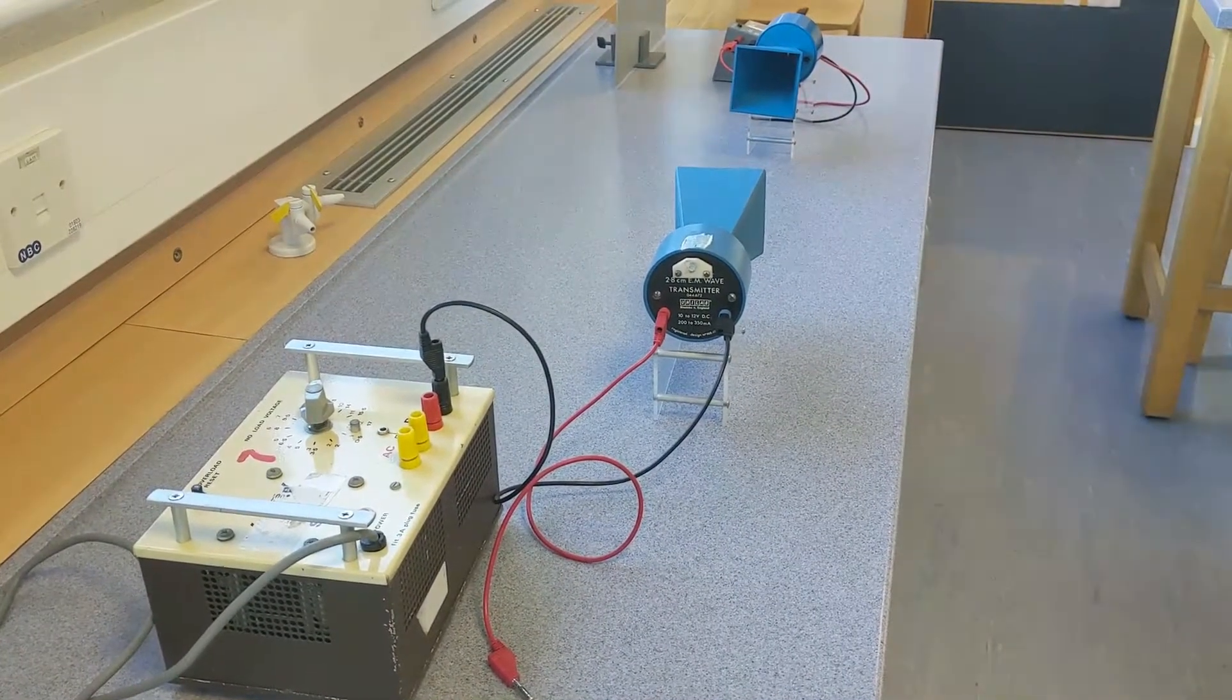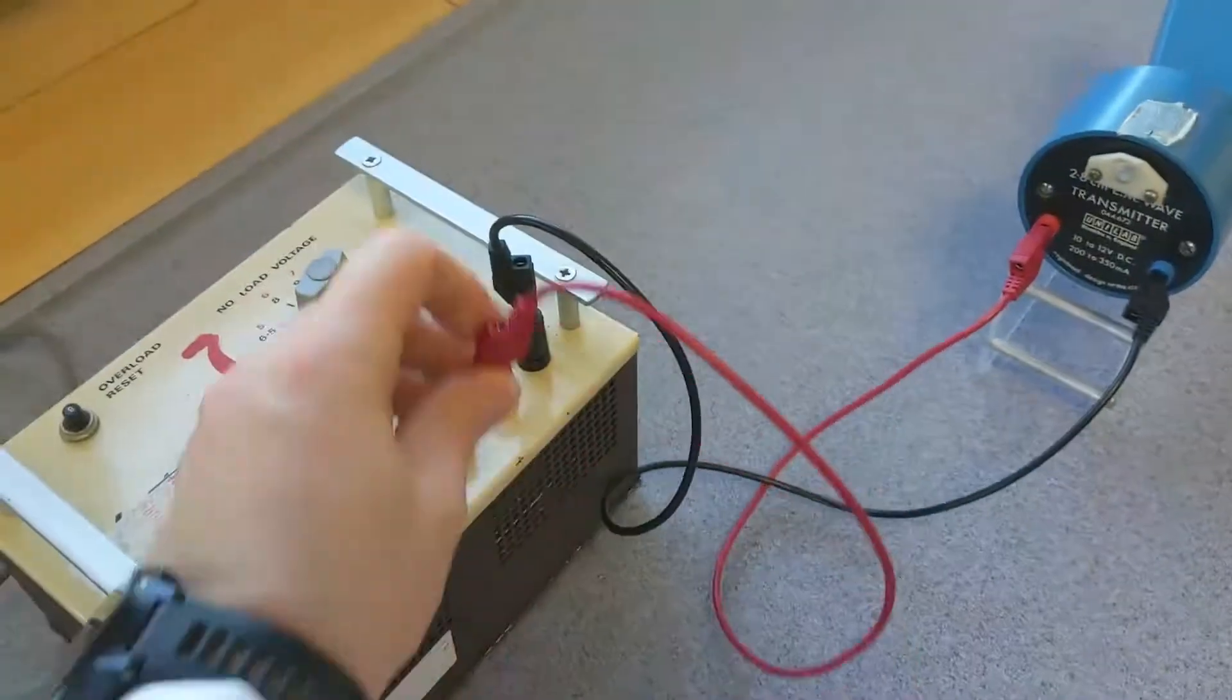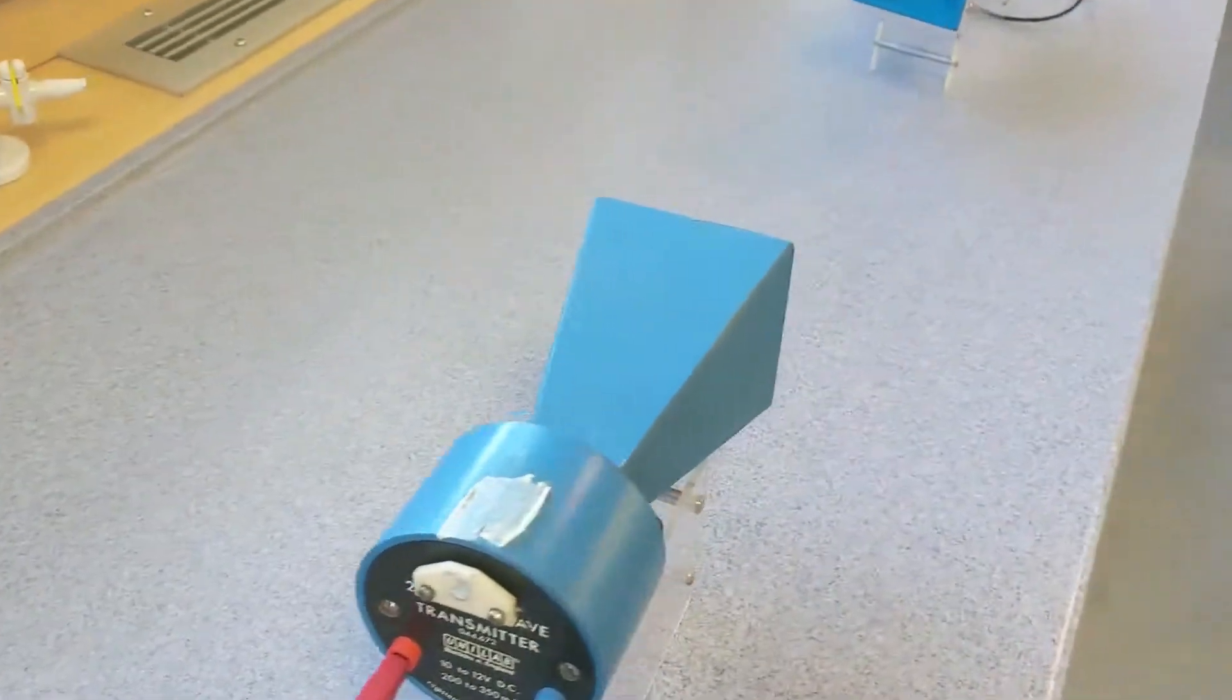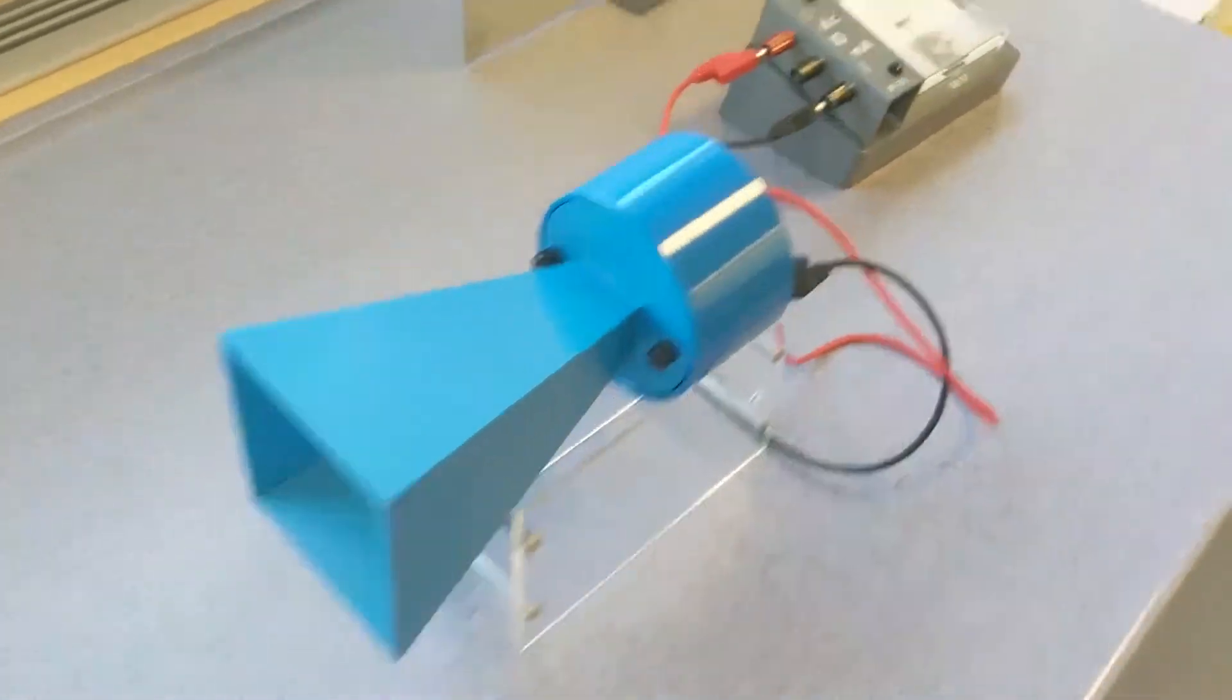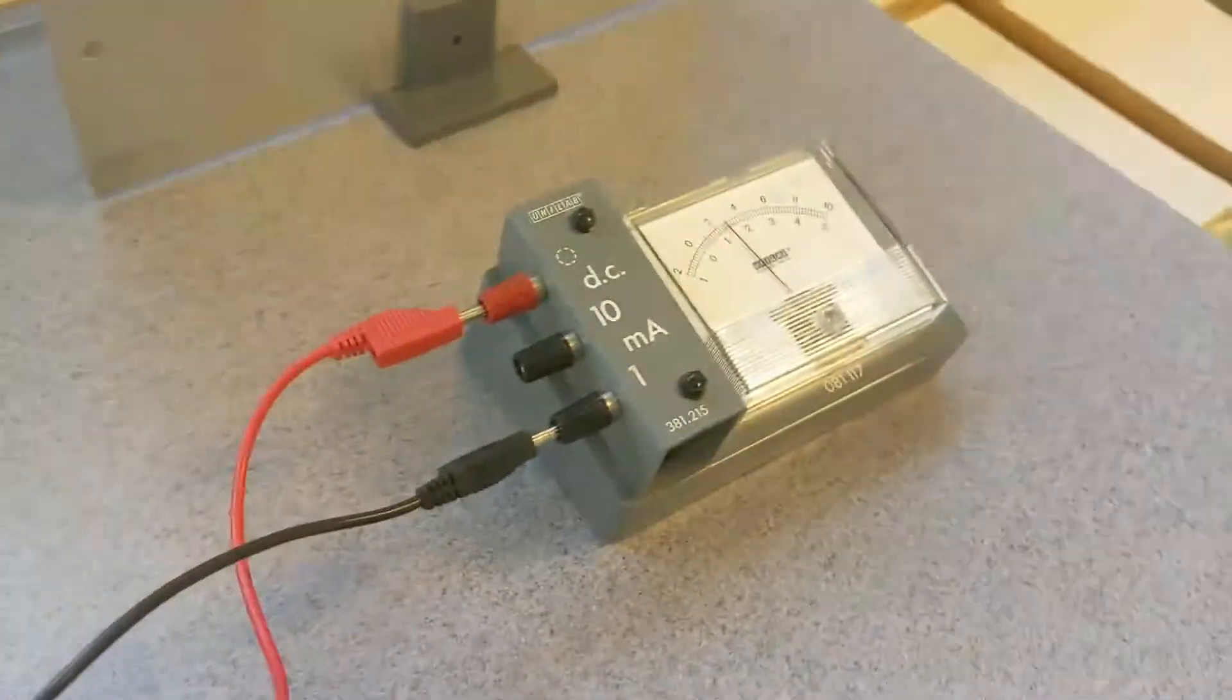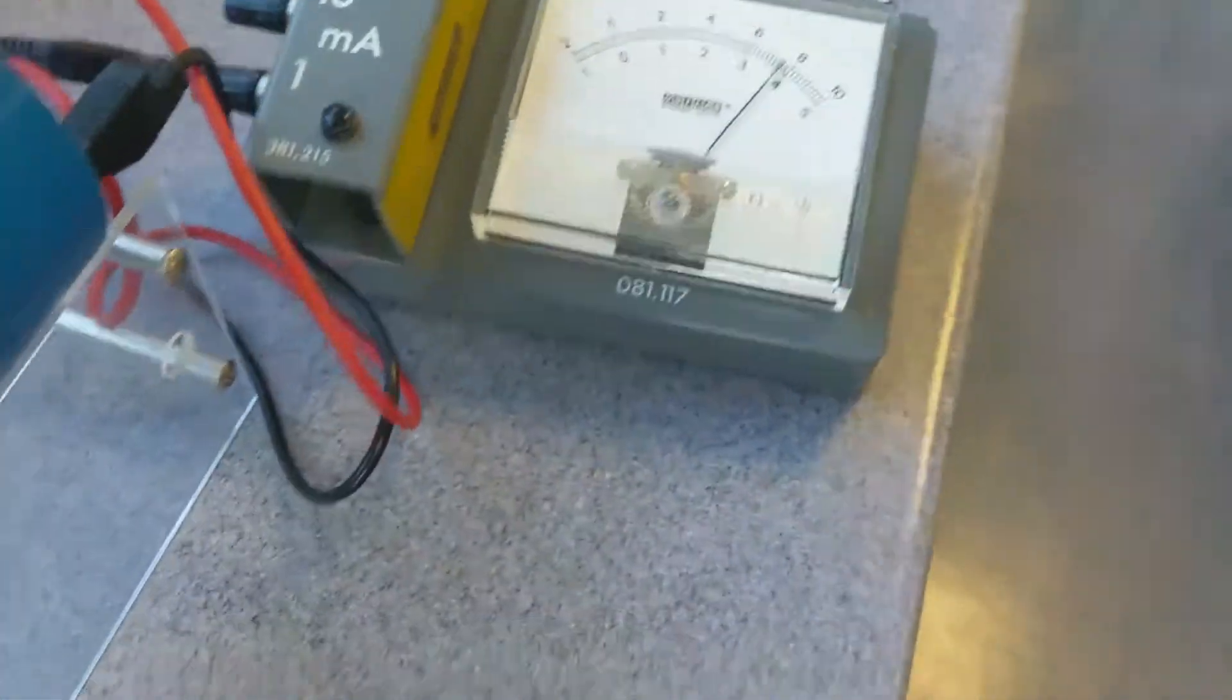Here we're looking at the reflection of microwaves. So what we've got is a microwave transmitter and that is sending microwaves over to the receiver and that's the meter which is reading them.